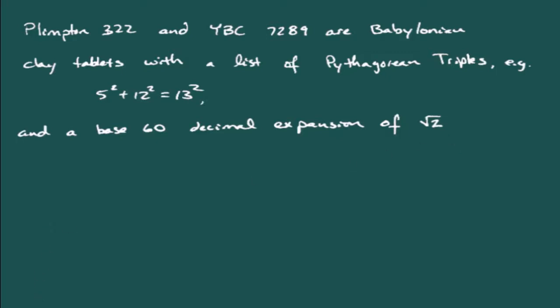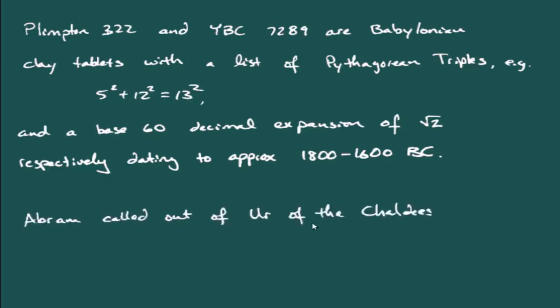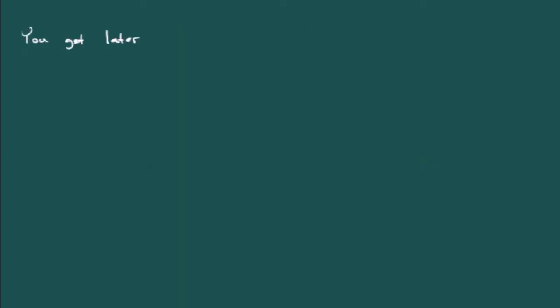Now, we actually find these two clay tablets are dated back to be somewhere between 1800 and 1600 BC. Now, also to put some perspective on that, it's estimated that Abram was probably called out of Ur of the Chaldees at about 1950 BC. So, just to give you an idea about, relatively speaking, how old some of this mathematics is, and what was going on in the same exact areas at the same exact times.